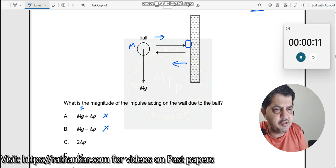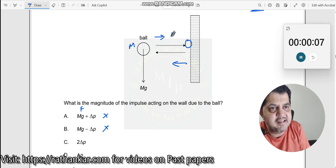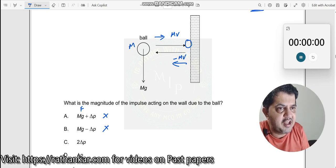Now 2Δp, what is 2Δp? Which means it goes, hits here and comes back. This has mv, this has minus mv, if you consider like this. Now what does it say? So if I take the difference between these two...